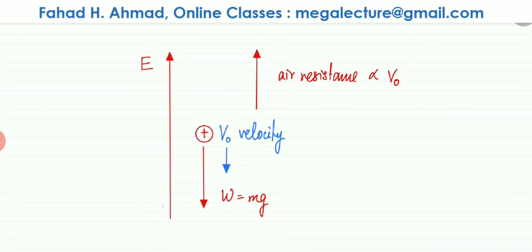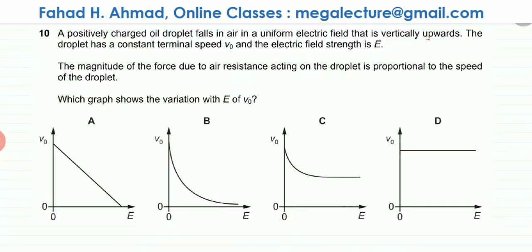There are three forces: the electric field is pushing the charge in the upward direction, the air resistance is also pushing the charge upward, whereas gravity is pulling the charge downward — and the end result is that the oil droplet falls with velocity V₀. The question asks which graph shows the variation of V₀ with E: as the electric field strength increases, how is V₀ affected?